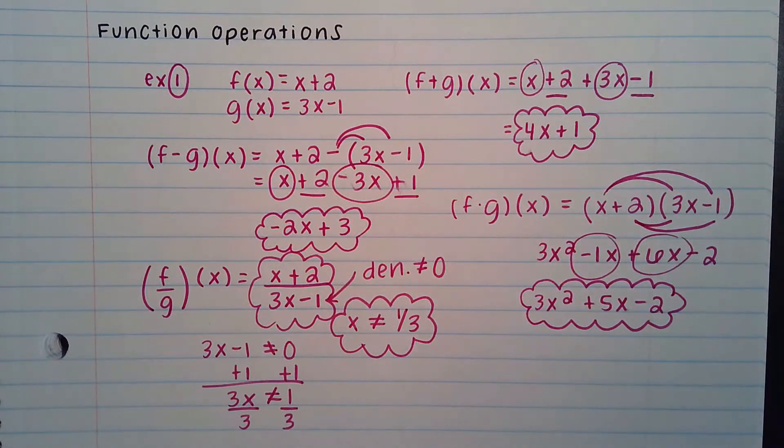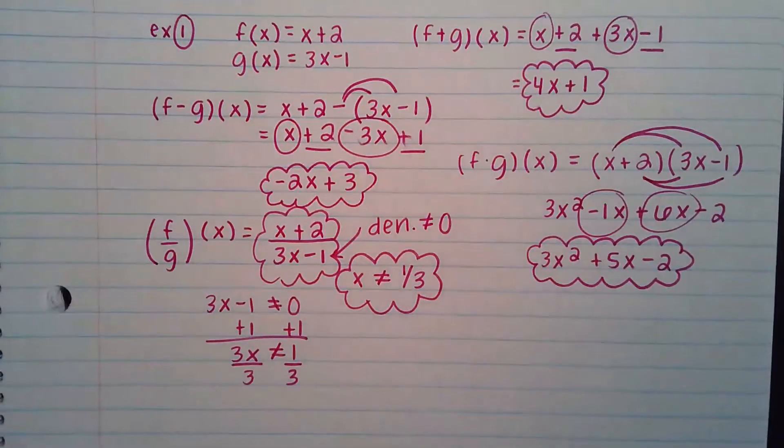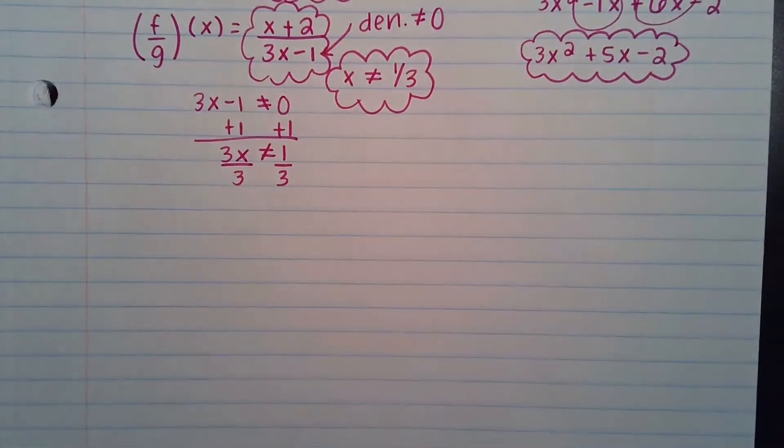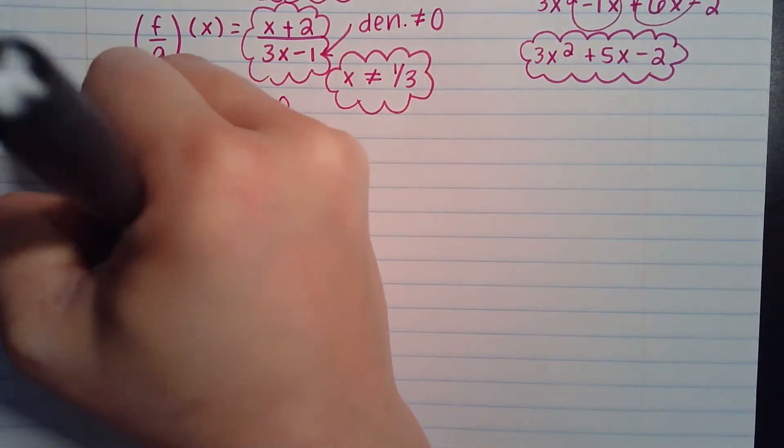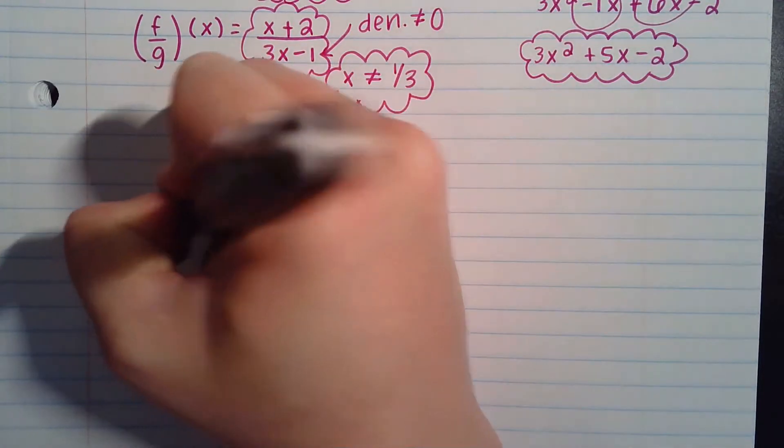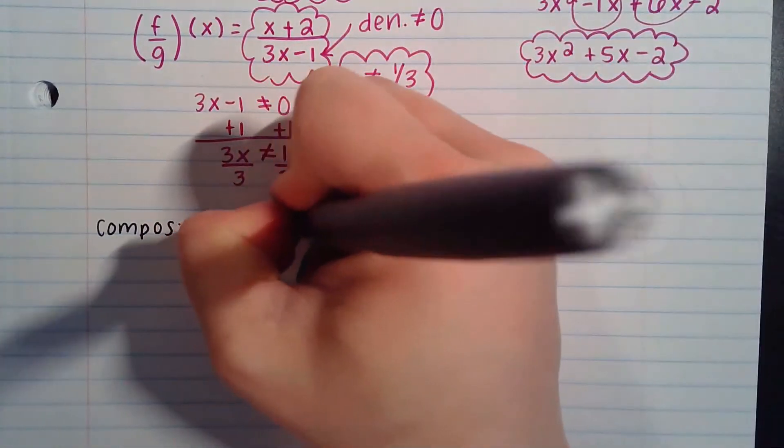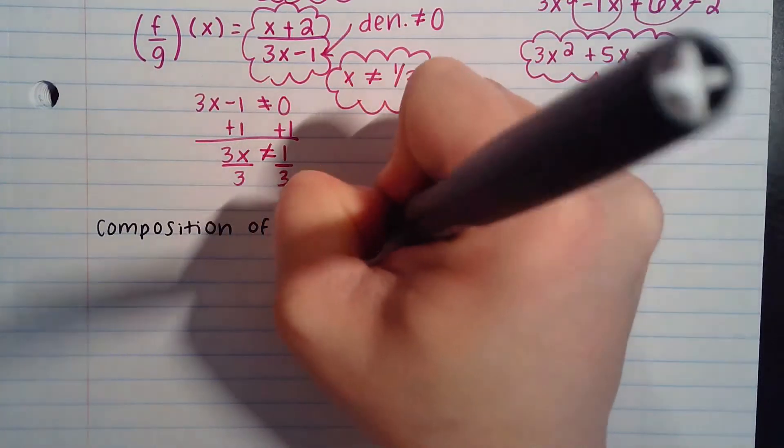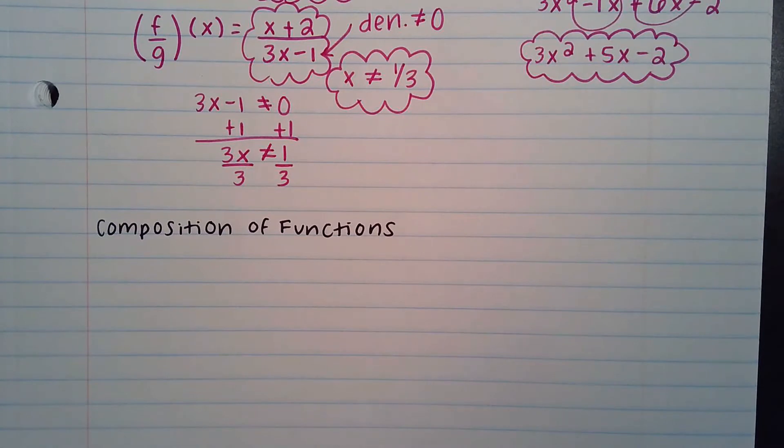Okay, so that's the function operation. So just adding, subtracting, multiplying, and dividing. So then the next one that we're going to do is the composition of functions. When we compose functions, you are talking about plugging one in to the other, putting them together in some sort of way. Okay, so we're going to do this with a few examples. The first one we're going to do is just going to be with coordinate points. The second one we do will be with actual equations. And then the last one we do will be kind of combining function operations and composition of functions.